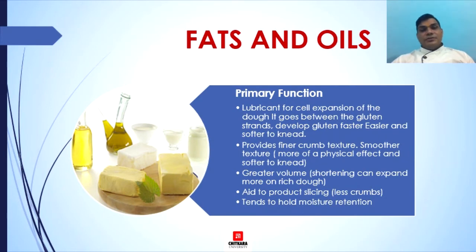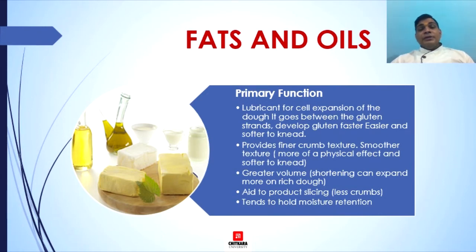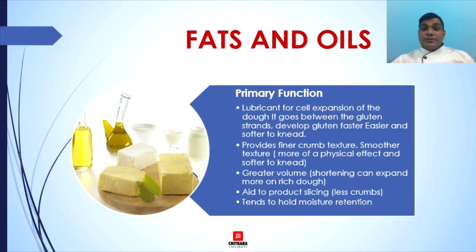The next ingredient is fats and oils. Fat incorporated into the flour mixture physically interferes with the development of gluten, creating a more tender crumb. The fats most commonly used in baking are shortening, unsalted butter, and margarine. Vegetable oil and olive oil, along with animal fat lard, are also used in some bread making. Fat helps in lubricating the cell expansion of dough, goes between the gluten strands and makes gluten faster, easier, and softer to knead. It also helps in increasing the volume of the bread and assists in obtaining a good slice when cutting.